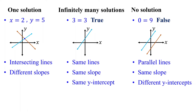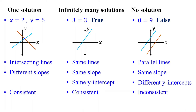A system of equations can be classified as consistent or inconsistent. If the system has at least one solution, it is called a consistent system. Therefore, systems with one solution or infinitely many solutions are consistent. If the system has no solution, it is an inconsistent system. Graphically, systems whose graphs are intersecting lines or the same lines are consistent, while systems whose graphs are parallel lines are inconsistent.